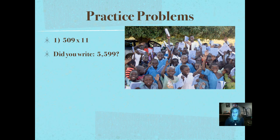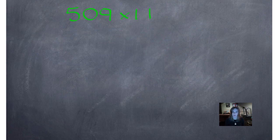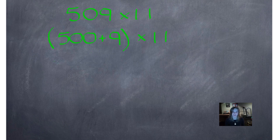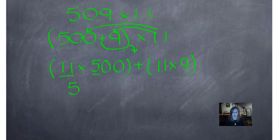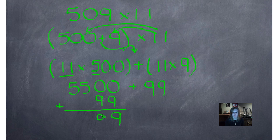Did you write 5,599? Let's see how we did that. To use the distributive property, I'm going to break apart this big number and write it as 500 plus 9, and multiply them both by 11. Then I can do 11 times 500 and 11 times 9. It's 11 times 500 and 11 times 9, and then I put my addition symbol in the middle. 11 times 5 is 55 — bring down my two zeros — plus 11 times 9 is 99. Hopefully you can see it's going to be 5,599.